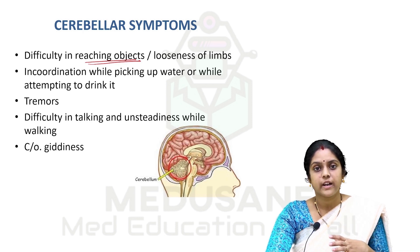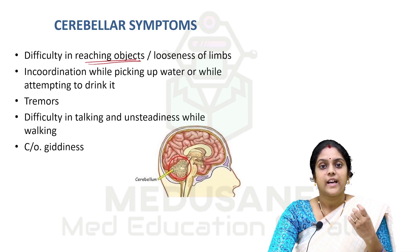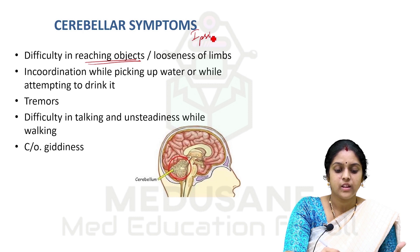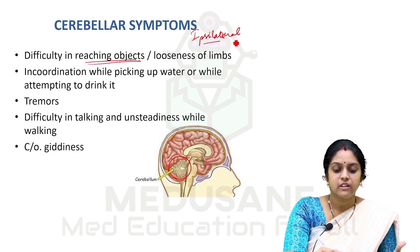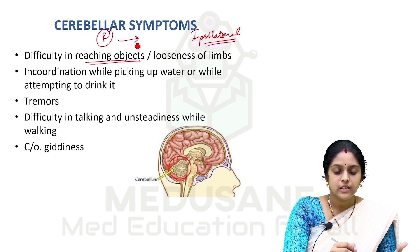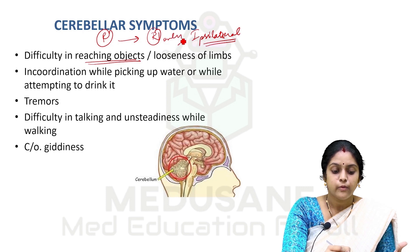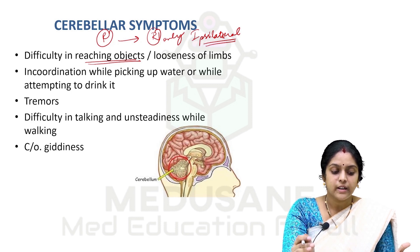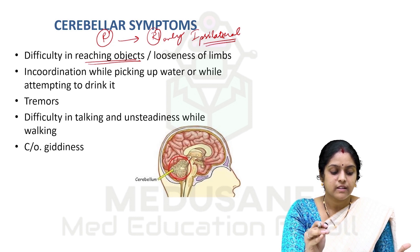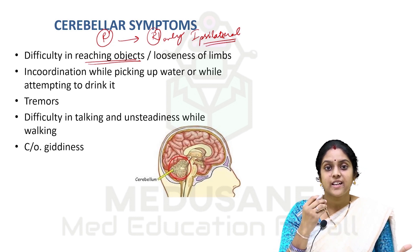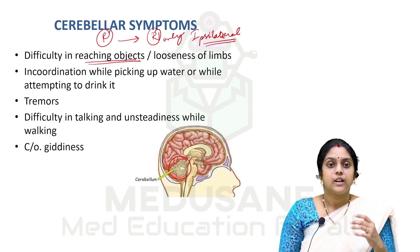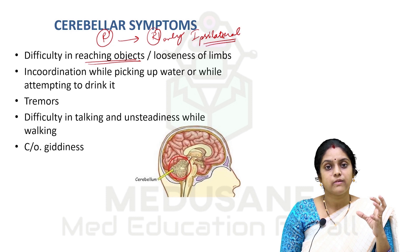In cerebellar involvement, you will see a lower motor neuron kind of weakness where the muscles are very loose and there may also be fasciculations or twitching of muscles. Importantly, the lower motor neuron weakness in cerebellar involvement is ipsilateral — this is very important. If the patient has a right cerebellar involvement, the weakness of the muscles will also be on the right side only. Whereas in cerebral involvement, the weakness will almost always be on the opposite side. Ipsilateral lesions involve the cerebellum. Other complaints the patient might mention include difficulty in talking and unsteadiness while walking, feeling that he is swaying to one side.